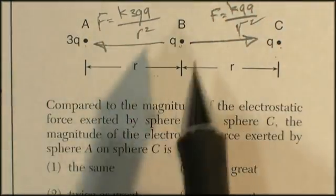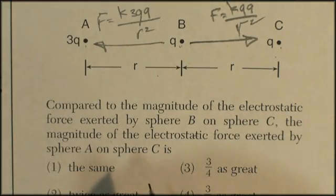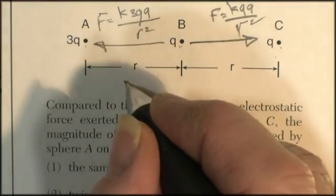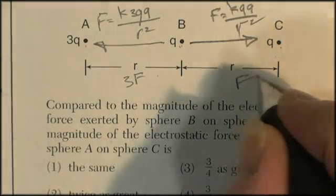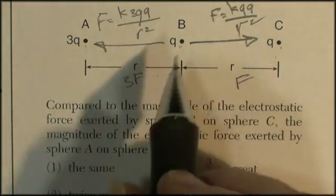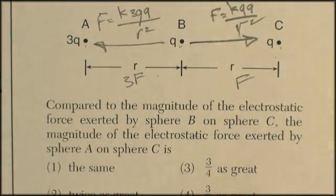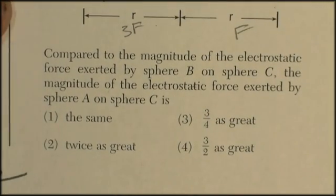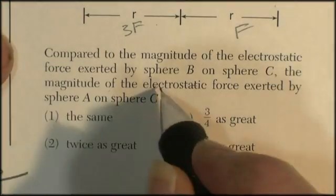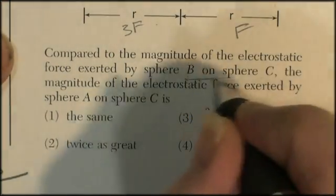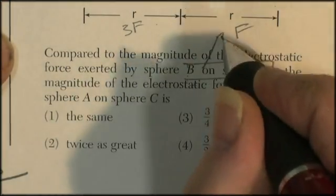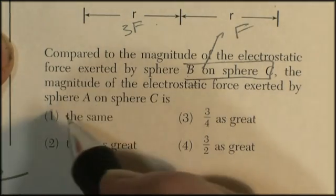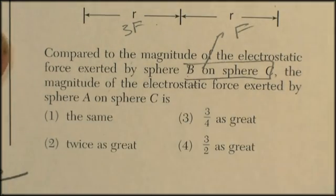Let's say the r is 1 and each of the q's is 1. I don't even know. So this is basically going to be 3f to f. So the force between b and c is f. The force between a and b is going to be 3f. So let's go see what the question actually says, now that we know the answer. Compared to the magnitude of the electrostatic force exerted by sphere b on c, which is f. The magnitude of the electrostatic force exerted by sphere a on c. Oh, great.